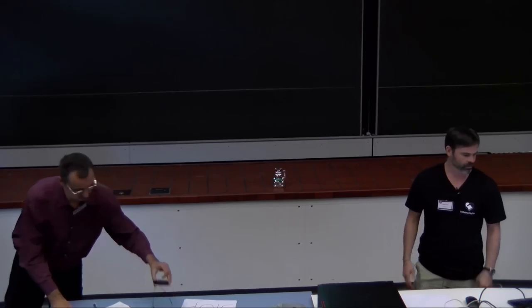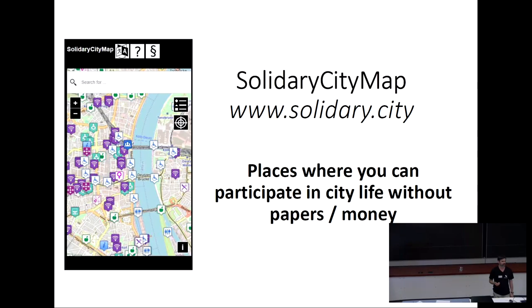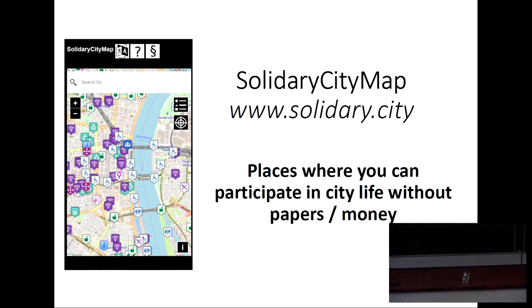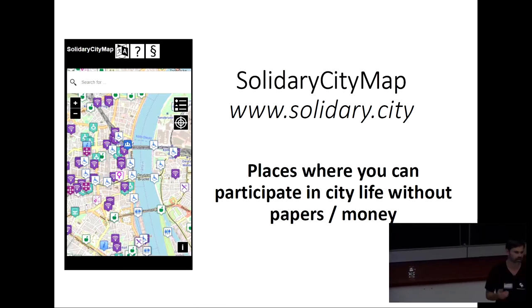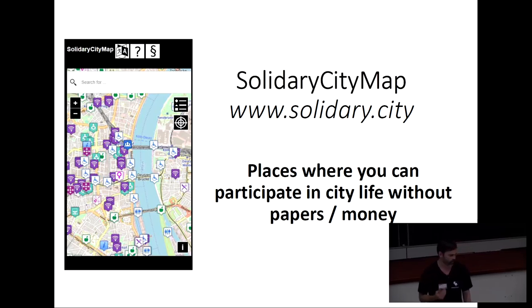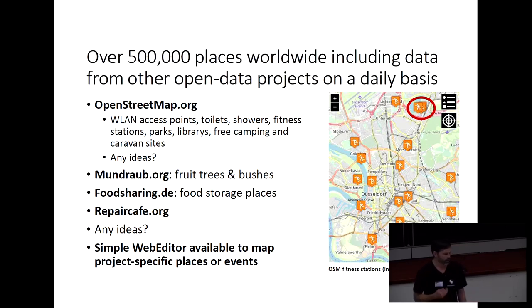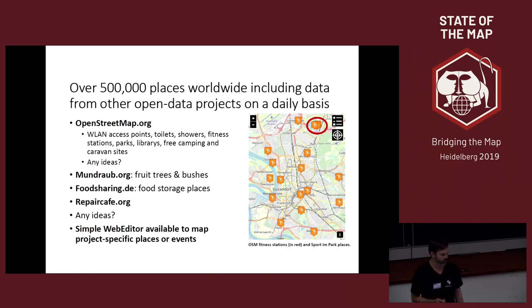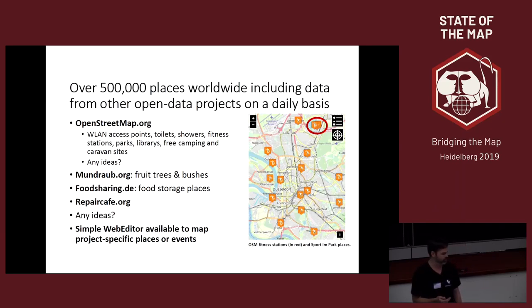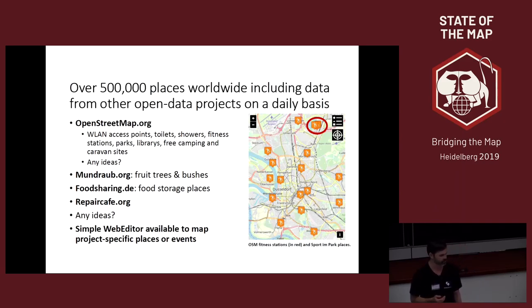Hello everybody. I want to introduce you to the Solidarity City Map. The concept behind a Solidarity City is that everyone is able to participate in city life, no matter what financial or legal status a person has. With this simple web map on the left side, you will find such places. There are already many such places mapped in other open data projects, first of all OpenStreetMap. On a daily basis the data is processed: public WLAN access points, toilets, showers, fitness stations, parks, libraries, free camping, caravan sites.